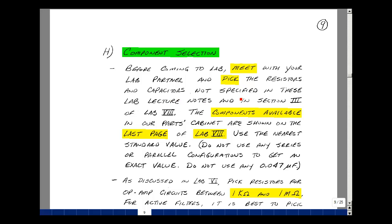Before you come to lab next time, I'd like you to meet with your lab partner and pick the resistors and capacitors that were not specified in these lab lecture notes or in Section 3 of Lab 8. The components we have available in our parts cabinet I've shown as the last page of Lab 8. Use the nearest standard value and don't use series or parallel combinations to get the exact value. The room equalizer is not a super precise circuit, so I'm just going to get close. In Lab 7, I used a 0.047 microfarad capacitor to design the bandpass filters. I'd like you to use a different value of capacitor for the bandpass filters in this lab.